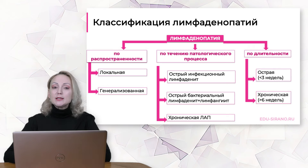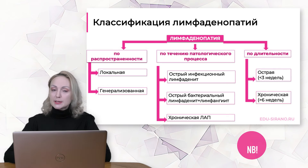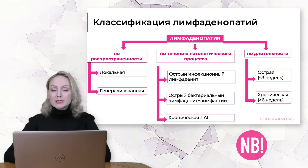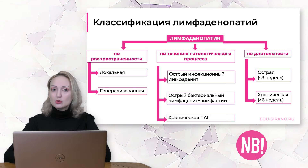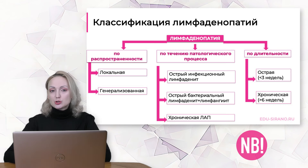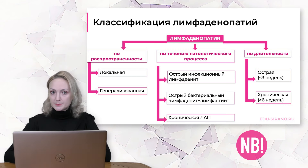По длительности лимфаденопатии разделяют на острые и хронические. Острой считается лимфаденопатия, которая продолжается менее 3 недель. Хронической считается лимфаденопатия с увеличением лимфатических узлов более 6 недель.